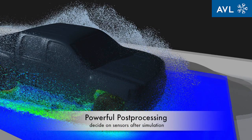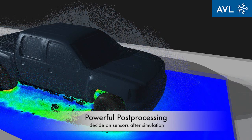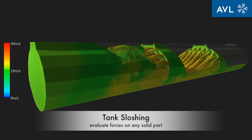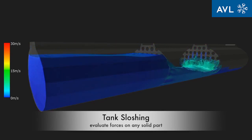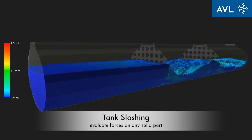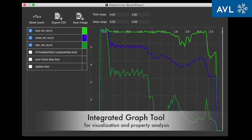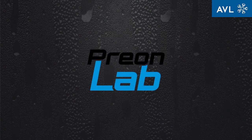Virtual flow and wetting sensors provide valuable data and can be defined after the simulation. Sloshing phenomena can be simulated in a few hours regardless of the shape and size of the tank. One can evaluate forces acting on any surface. The integrated graph tool is another powerful analytical tool. PrionLab – an efficient tool for complex liquid-dominated flows.